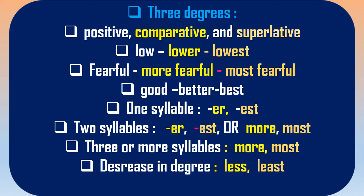When the word has two syllables, you can add 'er' and 'est' or 'more' and 'most'. For the second example — 'fearful' has two syllables, so you add 'more' and 'most'. For three or more syllables, again you add 'more' and 'most'. It is not always an increasing degree — sometimes we use the degree in decreasing form, and in that case you use 'less' and 'least'. The rules shown on screen are very important — you should learn them by heart.